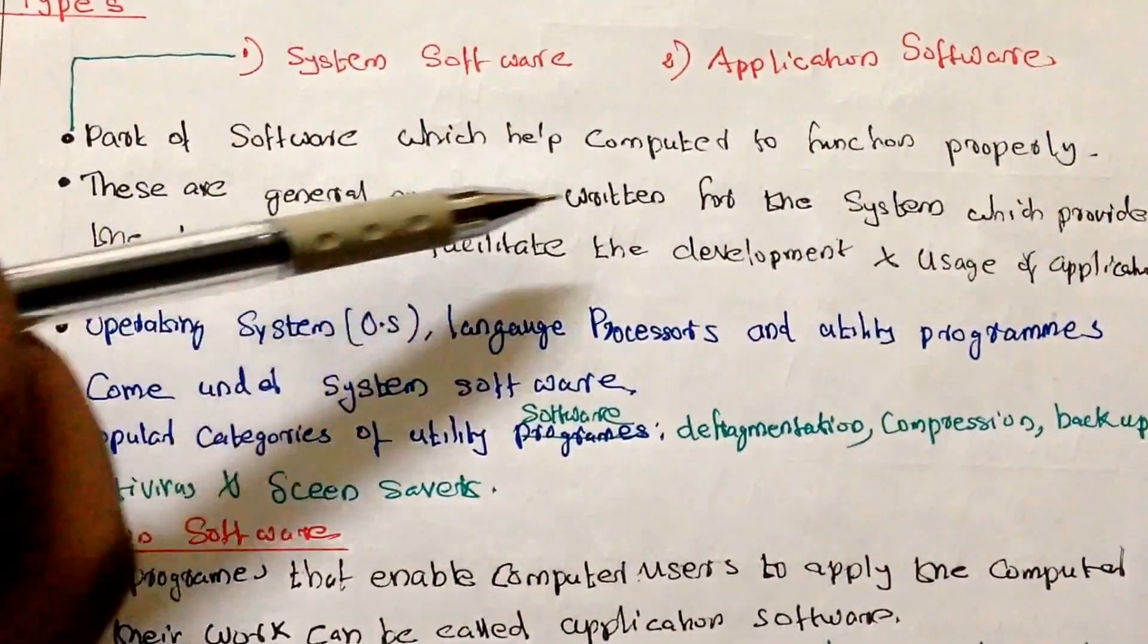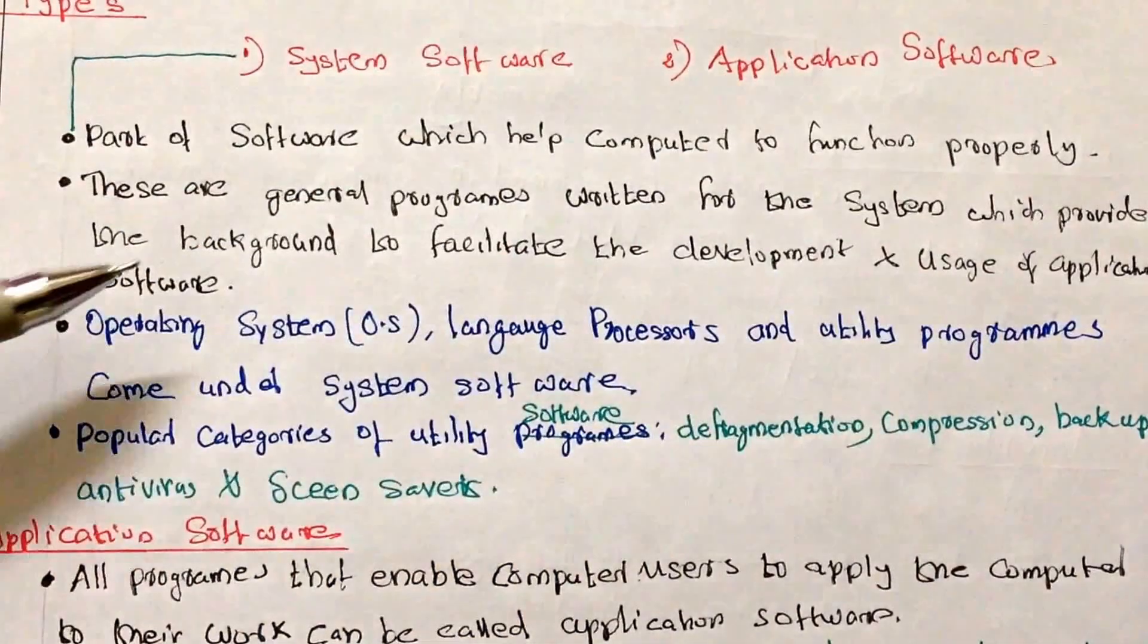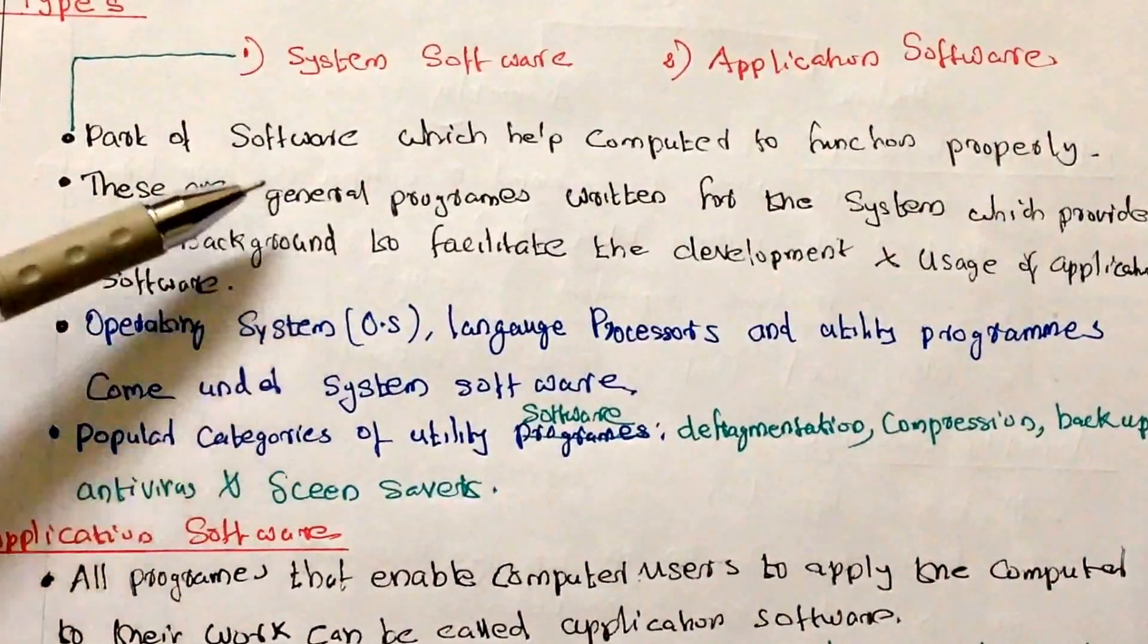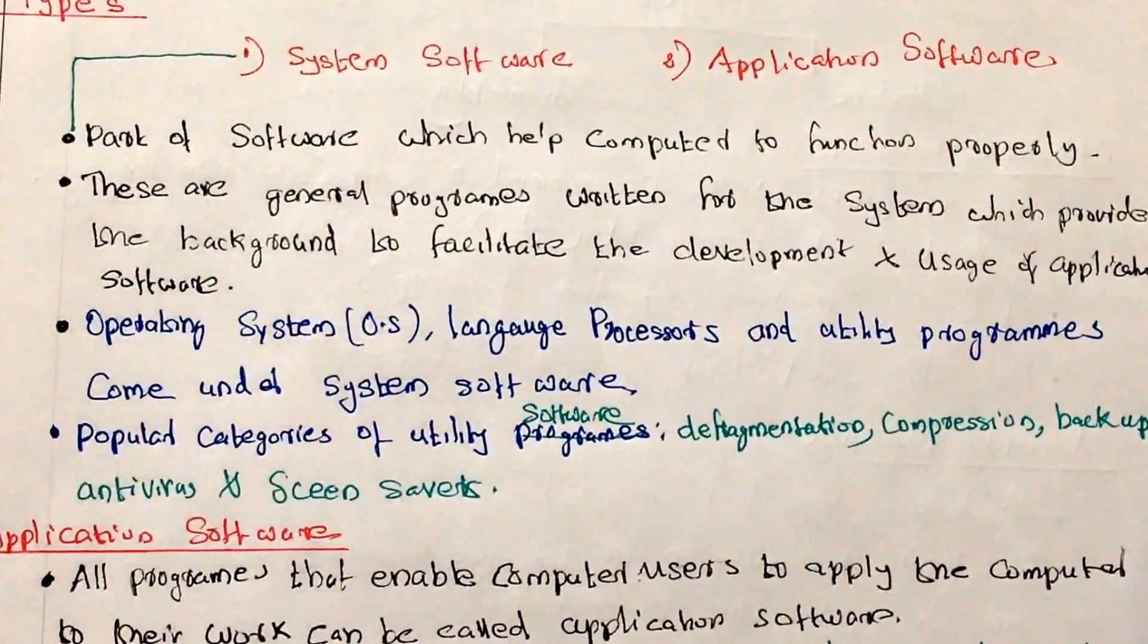And these are general programs written for the system which provide the background to facilitate the development and usage of application software. For developing the application software, also system software helps.